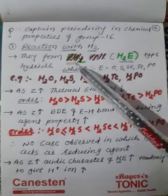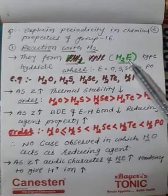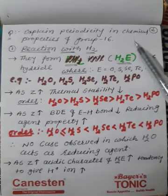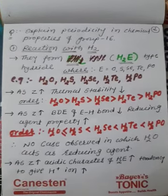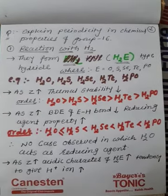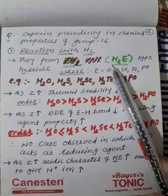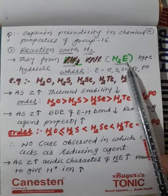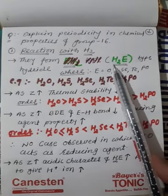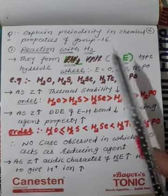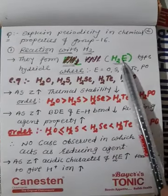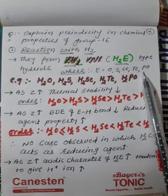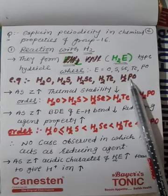Group 16 elements react with hydrogen to form H2E type hydrides, same as group 15 where we see NH3, PH3, H2S. Now, which comes first — the element or hydrogen? We have to write the electropositive element first and then the electronegative element. So for group 16 and 17, hydrogen comes first, then the element.